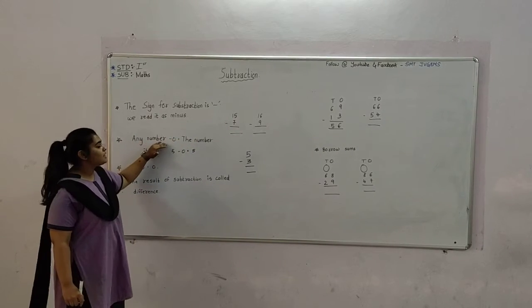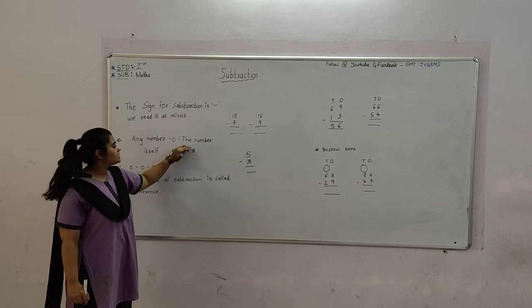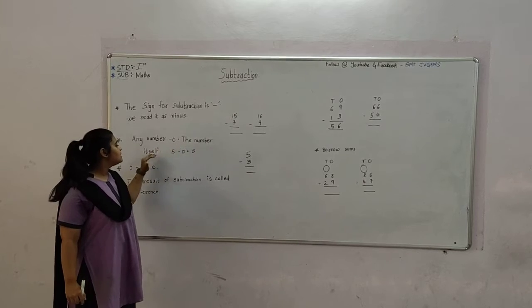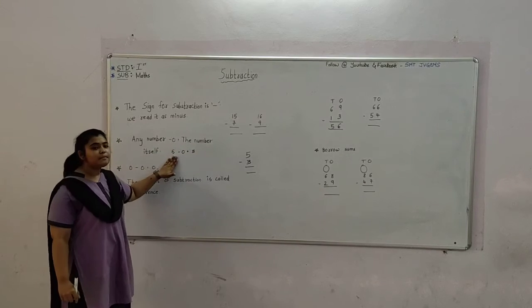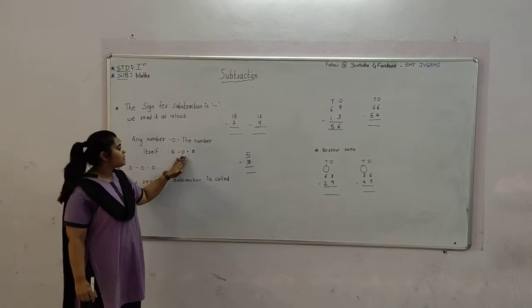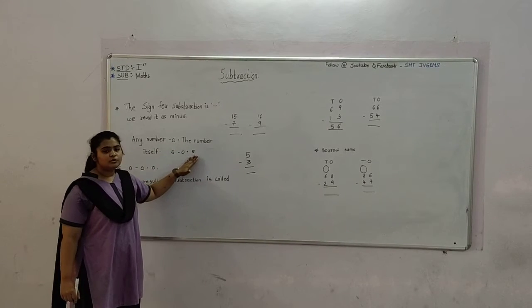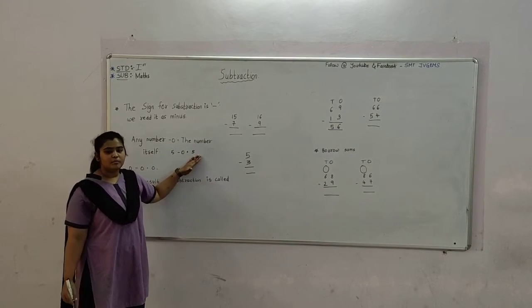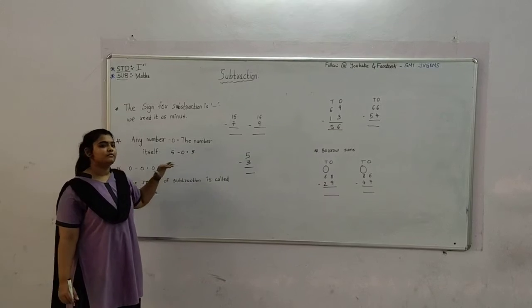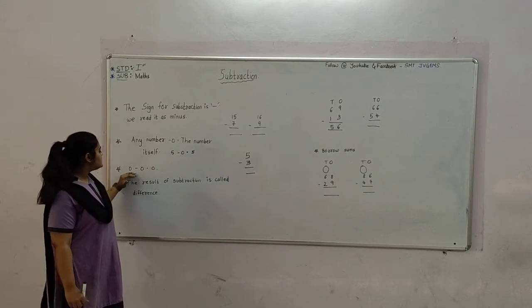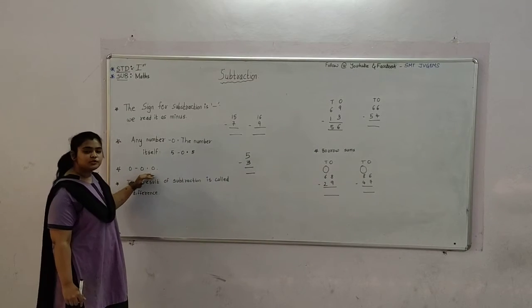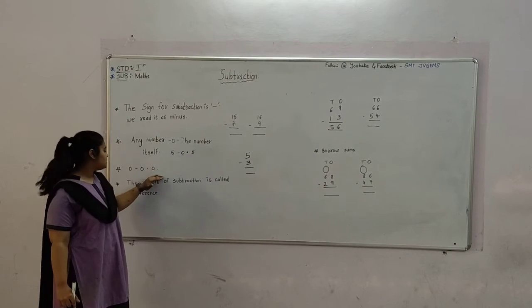Any number minus 0 is equal to the number itself. For example, 5 minus 0 is equal to 5 — the number itself. And 0 minus 0 is equal to 0.